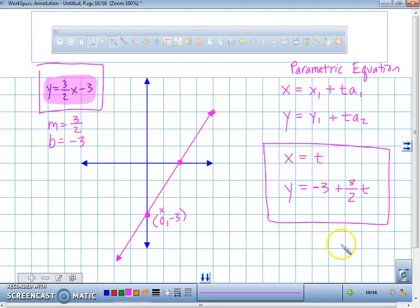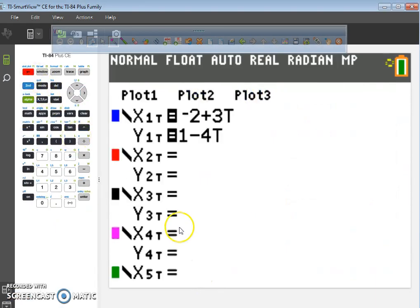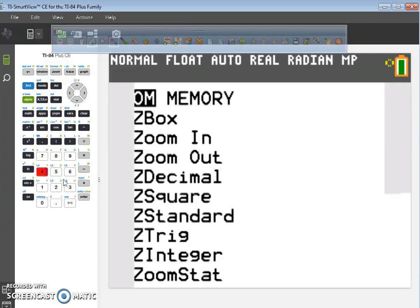Now, what I want us to do is I want us to go to the graphic calculator and see if this graph, these graphs match. Do these graphs match right here? So go right here, hit y equals, clear this out, clear this out, say x1t equals t. And then here, where did you start at? Negative 3. And do it plus 3 divided by 2t. And we're going to zoom number 4.